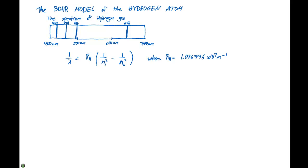These four lines occur at 410, 434, 486, and 656 nanometers. And these lines are going to be violet, blue, blue-green, and red.